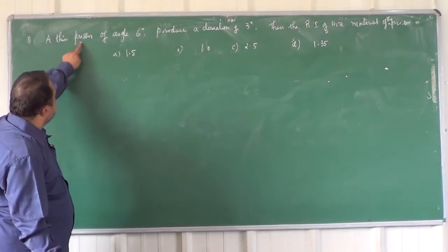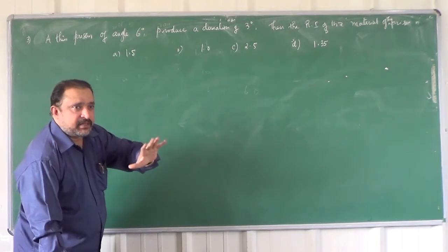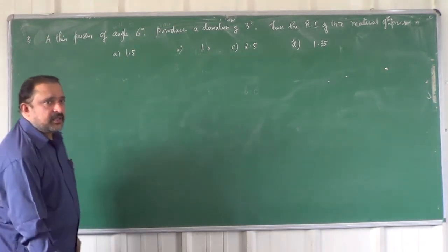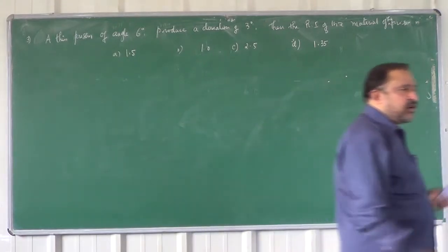If you look at this problem, the angle of the prism is 60 degrees. So it is a thin prism. For a thin prism, what is the formula for the deviation?